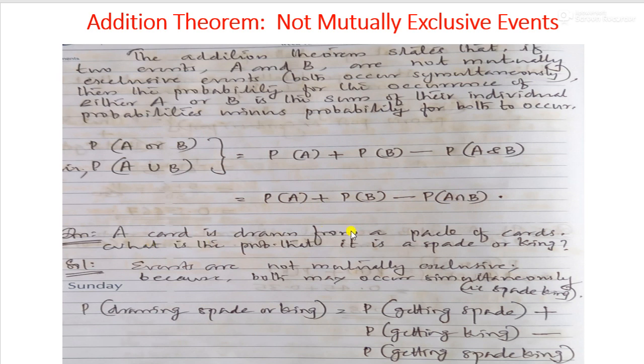A card is drawn from a pack of cards. What is the probability that it is a spade or a king?